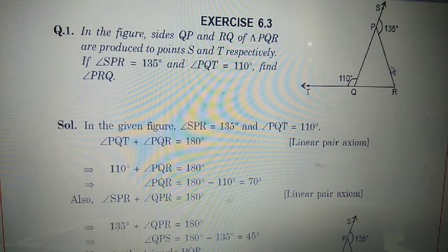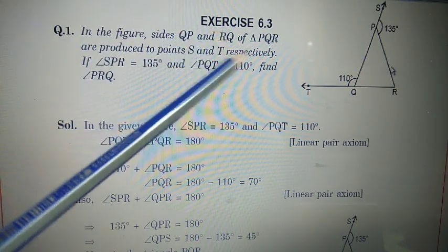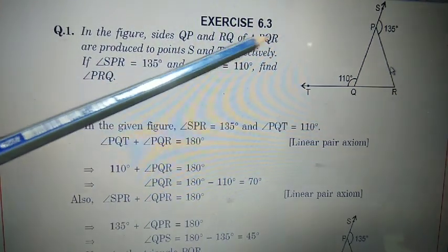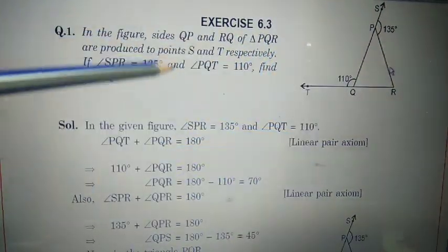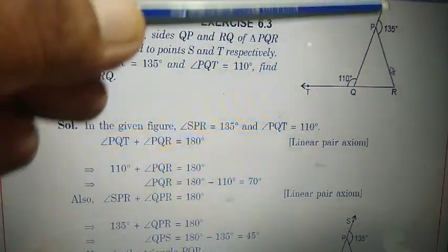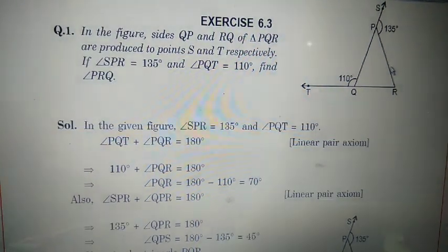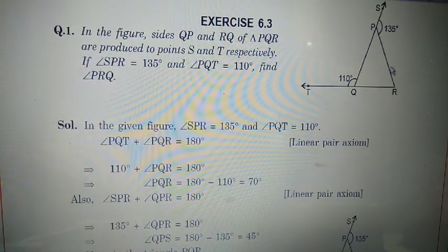Now students, Exercise 6.3. In this figure, sides QP and RQ of triangle PQR are produced to points S and T respectively. Angle SPR is 135 degrees and angle PQT is 110 degrees. We have to find angle PRQ.